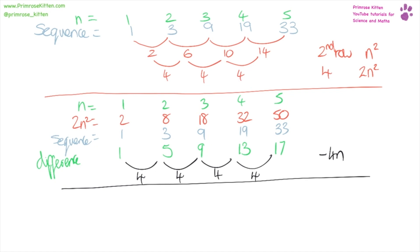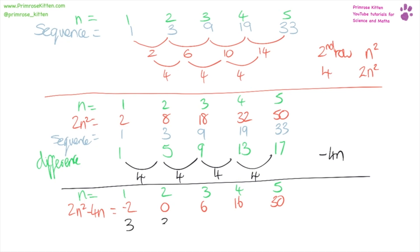Looking at the last part — for n = one, two, three, four, five — two n squared minus four n gives us minus two, zero, six, 16, and 30. Then looking at the difference between this and the original sequence, we find a difference of three, three, three, three, and three — giving us plus three.